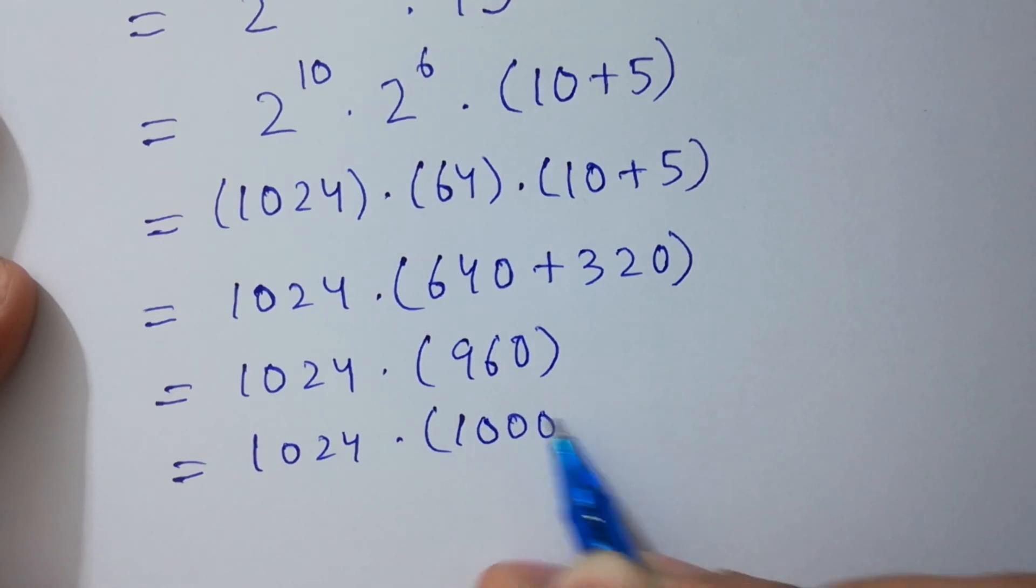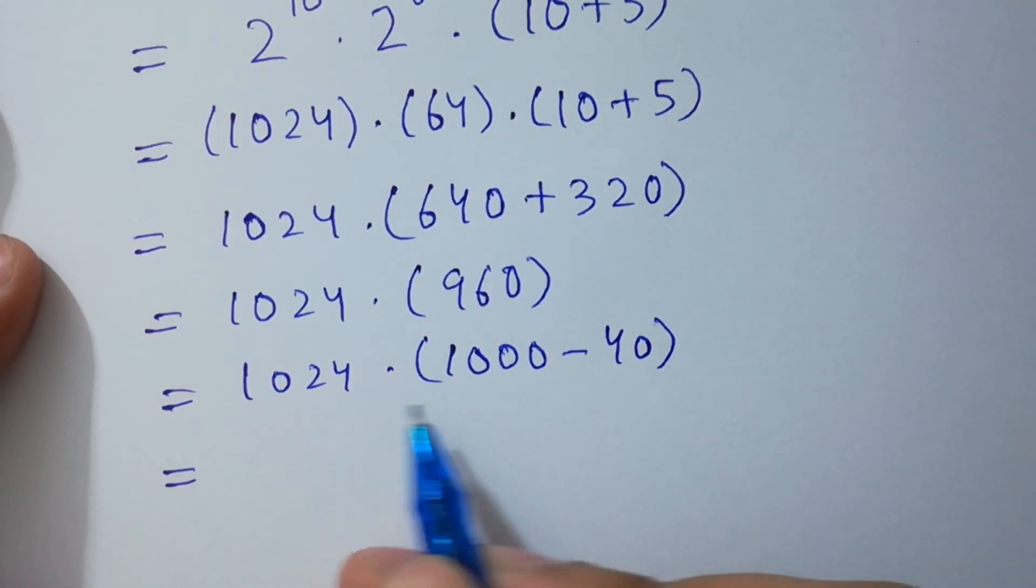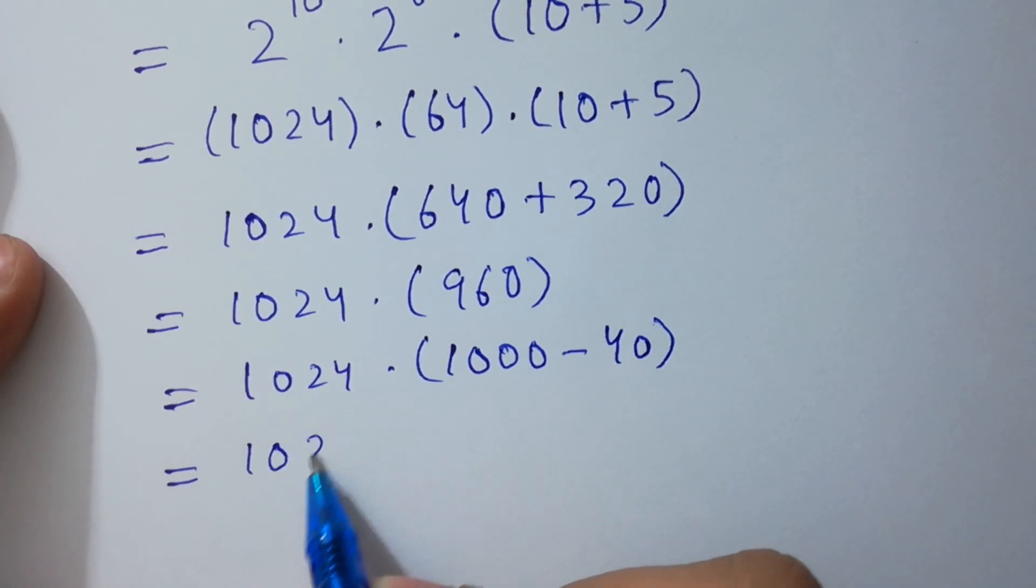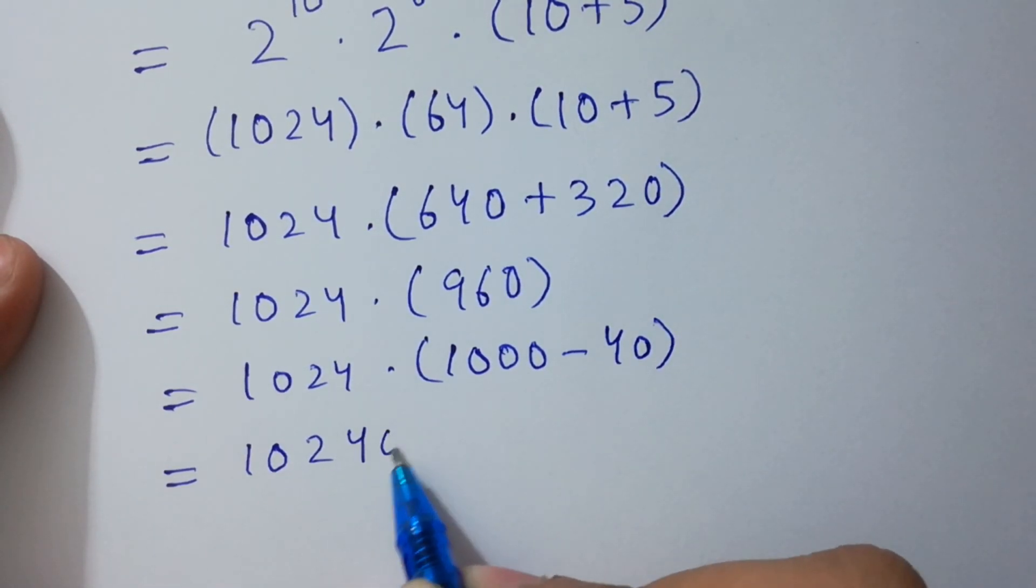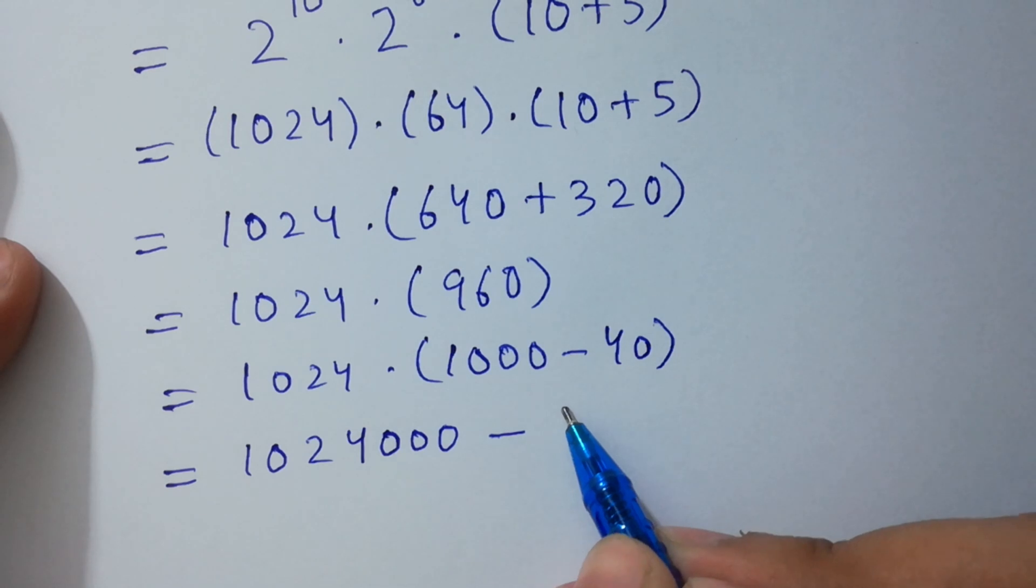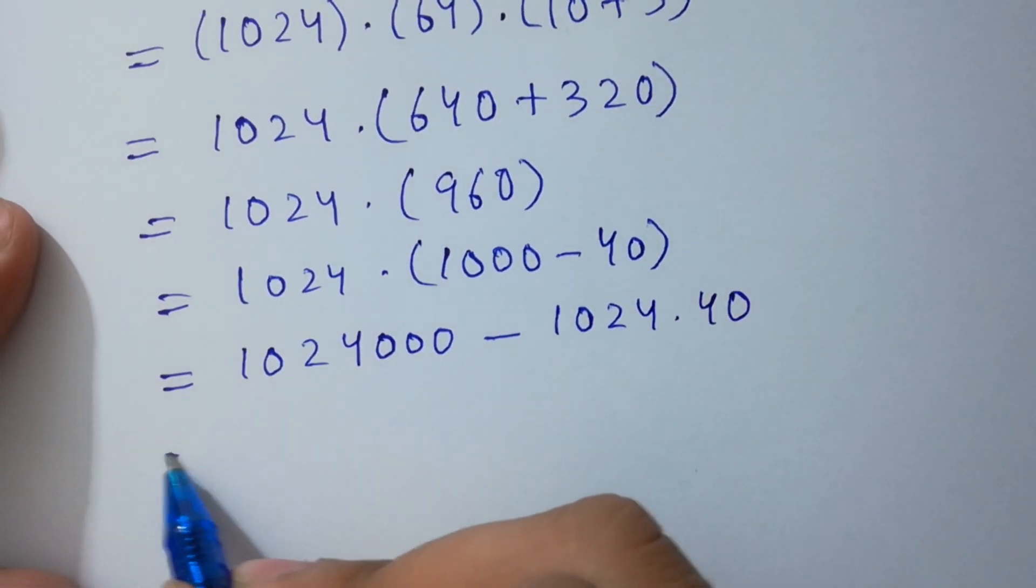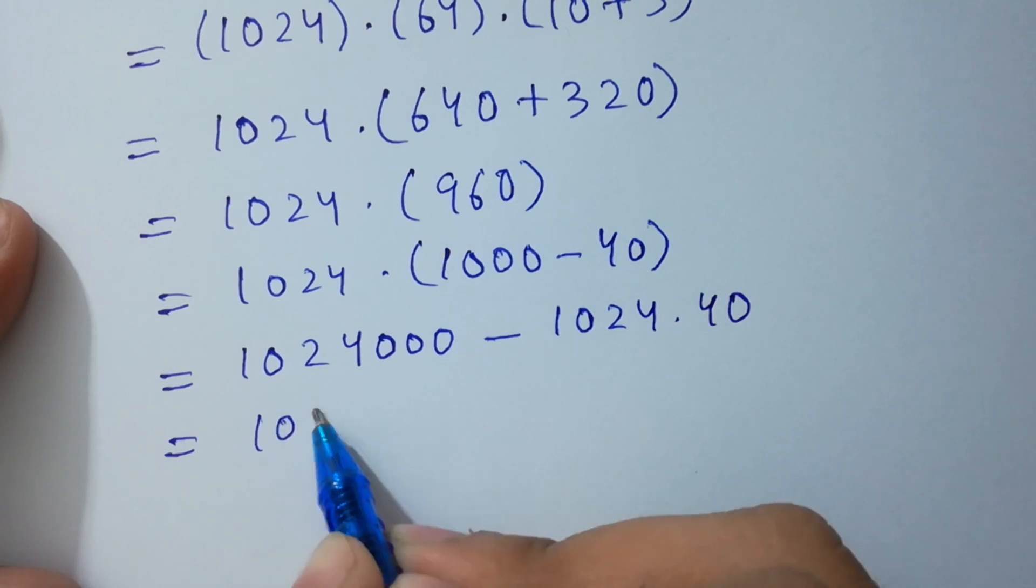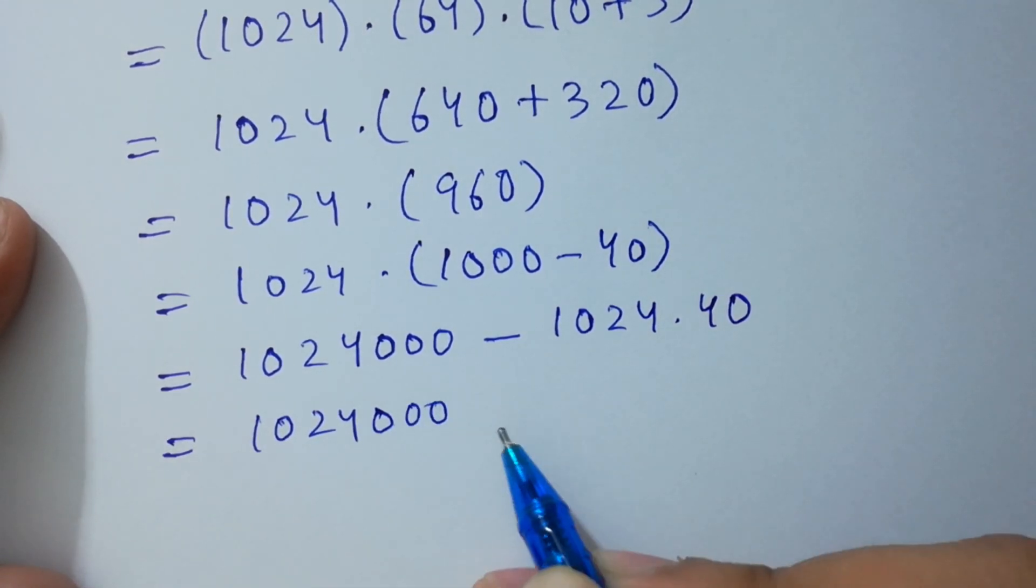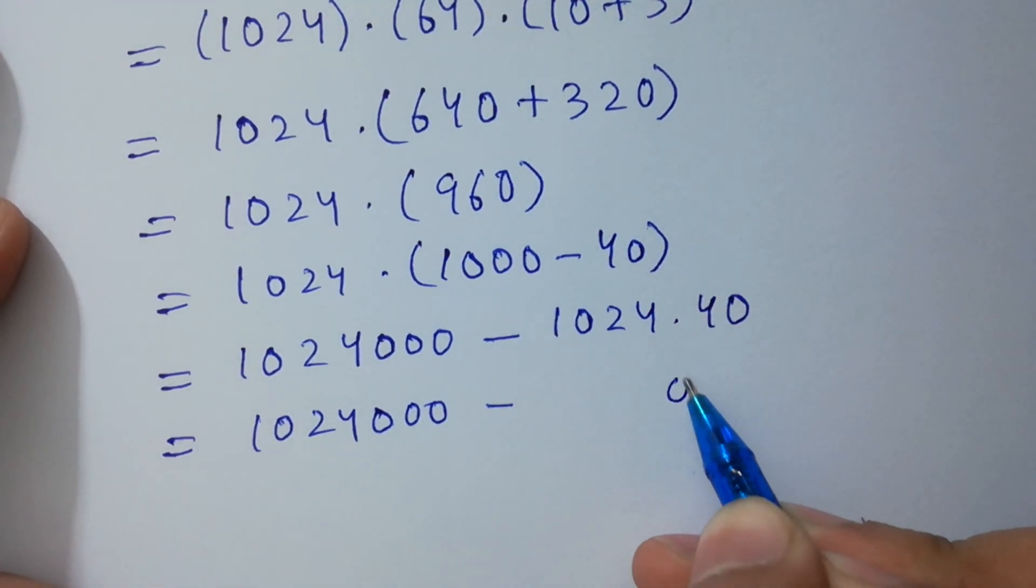960 can be written as 1000 - 40. So 1024 × 1000 equals 1024000, minus 1024 × 40 in the next step.